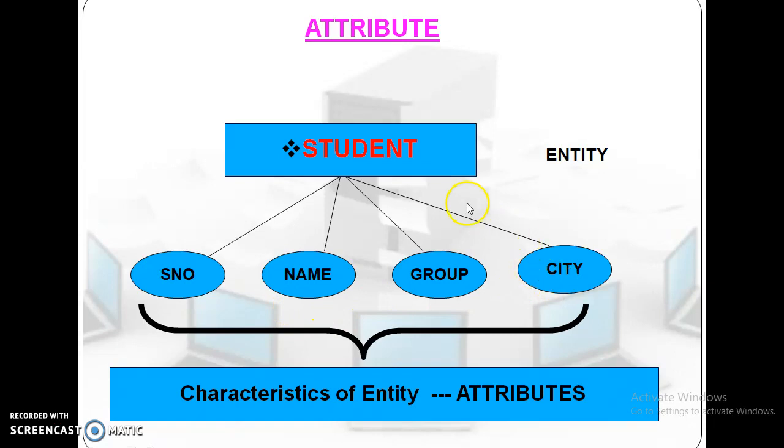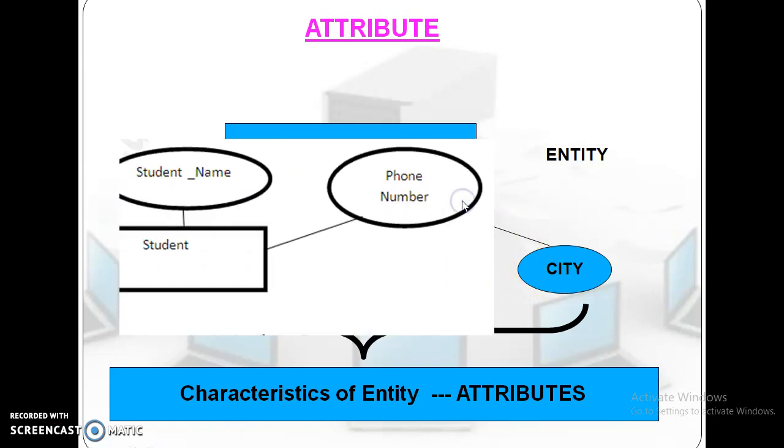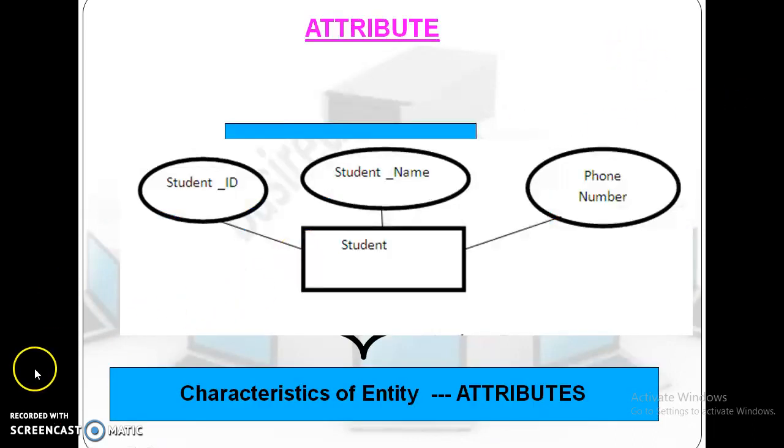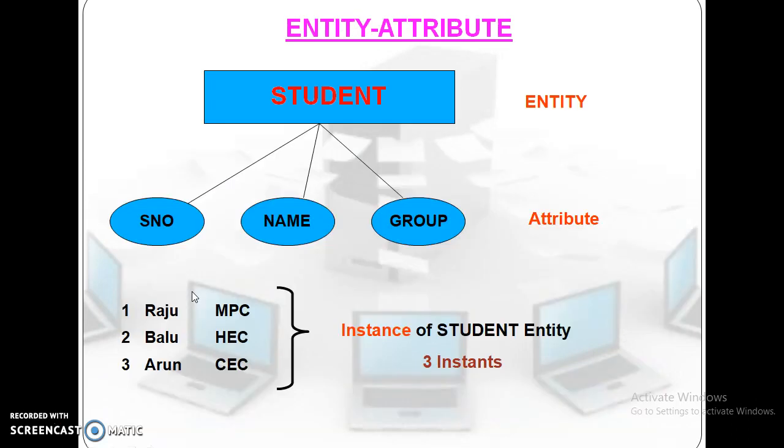These are called attributes of student entity. The student entity has serial number, name, and group. And Raju is number one, Balu is number two, and Arun is number three. These are called instance of a student entity. Here we are entering three elements, three members. These are called instance of student entity.